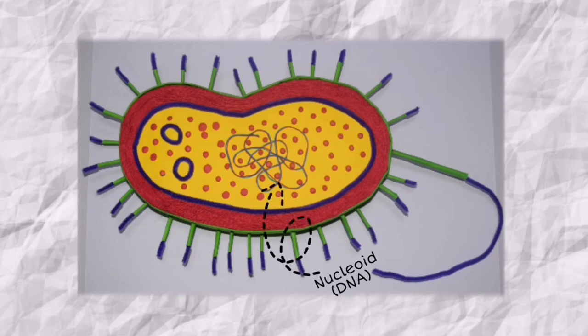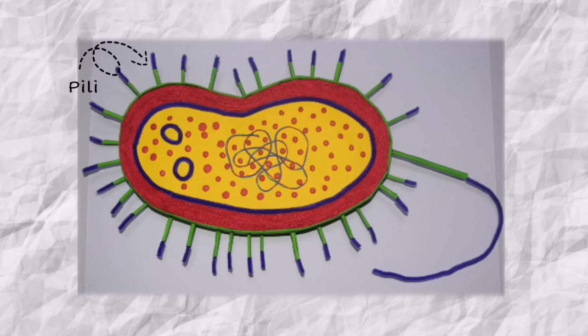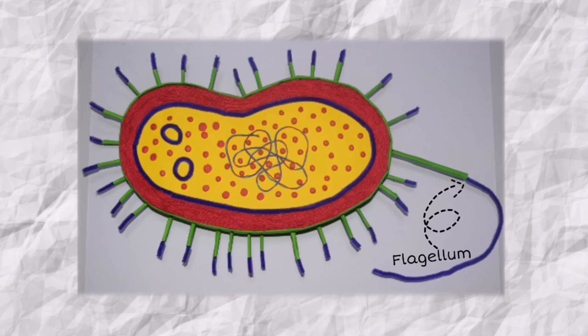The nucleoid. A region of cytoplasm where the chromosomal DNA is located. The pili. Small hair-like projections emerging from the outside cell surface. The flagellum. Hair-like structures that provide a means of locomotion for those bacteria that have them.